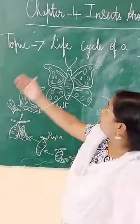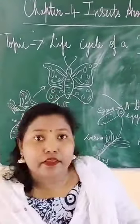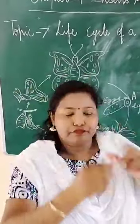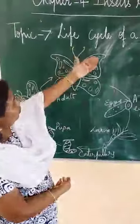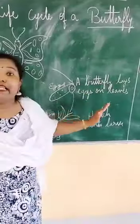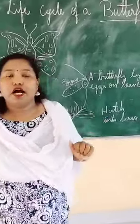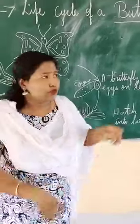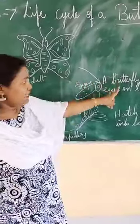Now we will learn about the life cycle of a butterfly. You have seen a butterfly? This is a butterfly. Now, the life cycle of a butterfly — an adult butterfly lays eggs on leaves. When you go to the garden and look at a leaf, you find tiny white dots on it. Those are the eggs. An adult butterfly lays eggs on leaves.